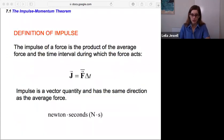So, impulse, or the impulse of a force, is the product of the average force and the time interval during which that force acts. And we call the impulse J. And then we have average force as the bar over it to show that that is average, it's non-instantaneous, times delta T, the time interval.